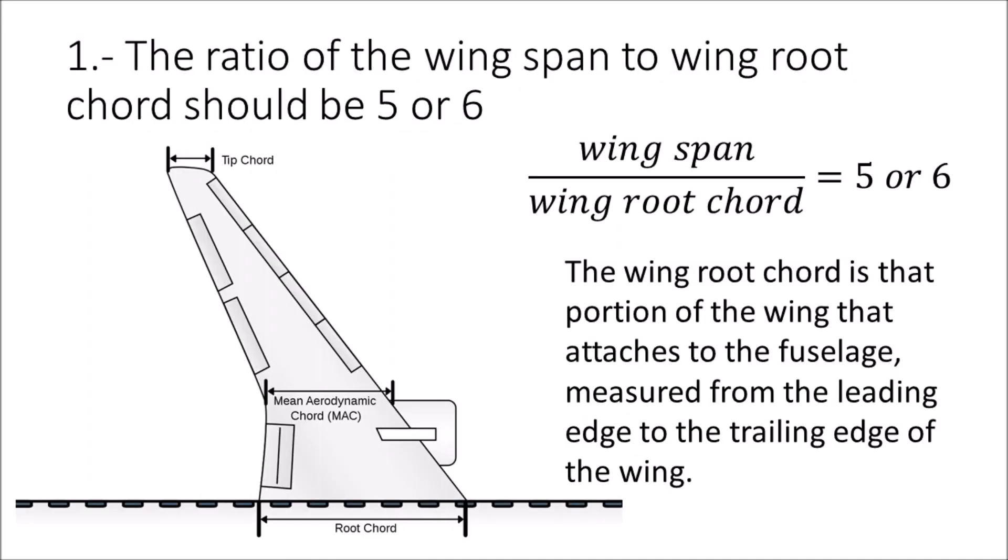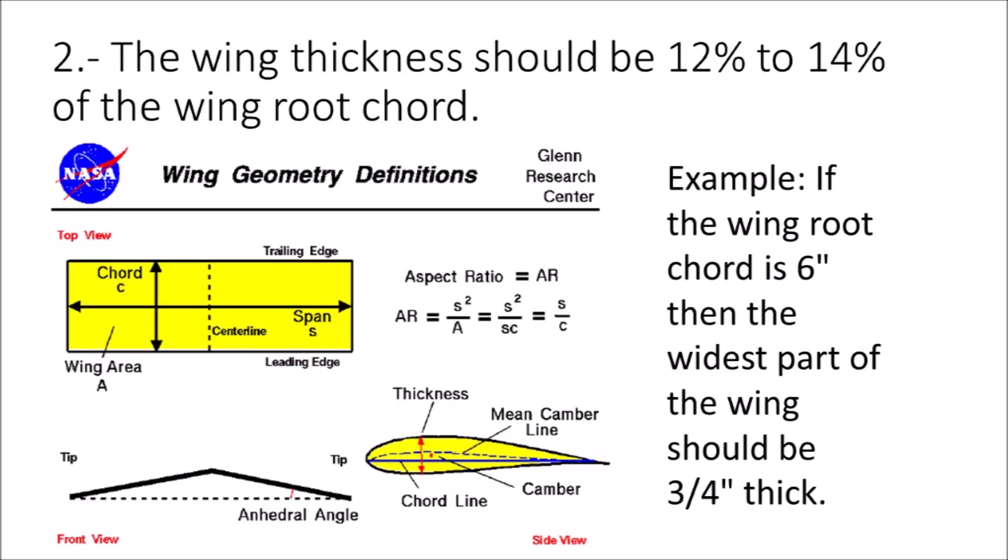The ratio of the wingspan to wing root chord should be 5 or 6. The wing root chord is that portion of the wing that attaches to the fuselage, measured from the leading edge to the trailing edge of the wing. The wing thickness should be 12% to 14% of the wing root chord.